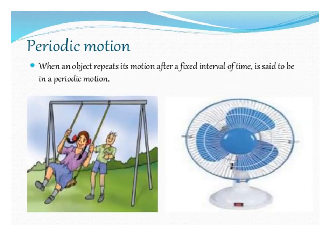Periodic motion: when an object repeats its motion after a fixed interval of time, it is said to be in periodic motion.